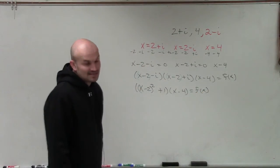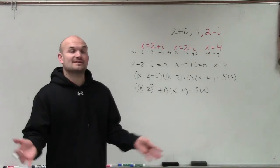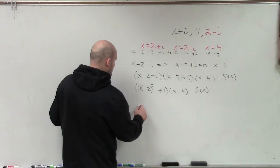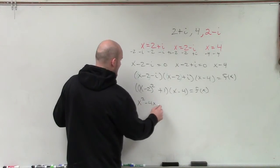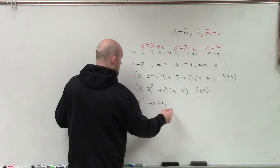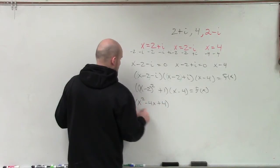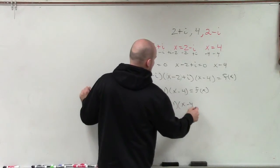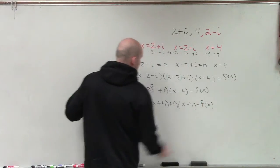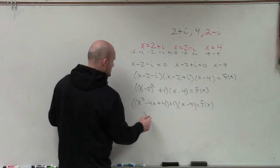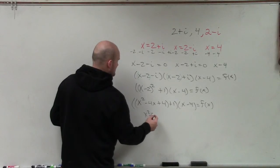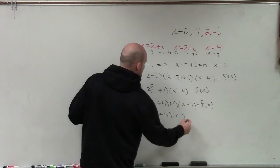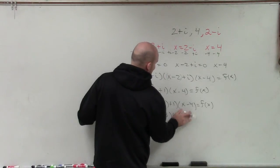Now, I do need to multiply my x minus 2 squared, but that's a binomial squared, which produces a perfect square trinomial. So therefore, I can rewrite that as x squared minus 4x plus 4, then plus 1 times x minus 4 equals f of x. So now I can add these up together. So now I have x squared minus 4x plus 5 times x minus 4 equals f of x.